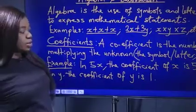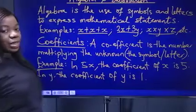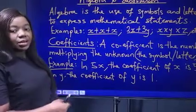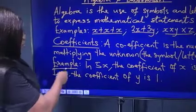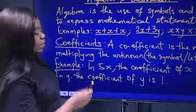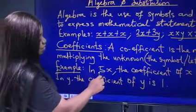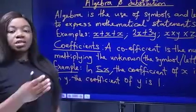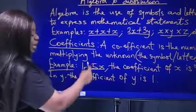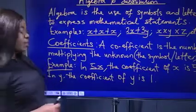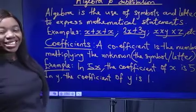Let's look at coefficients. What is a coefficient? A coefficient is a number multiplying the unknown — that is, the number multiplying that letter or symbol is known as a coefficient. Look at the example: in 5x, the coefficient of x is 5. You can see that 5 is multiplying x because 5 times x is 5x. And x is the letter in this algebraic term. So 5 is the coefficient of x because 5 is multiplying x.